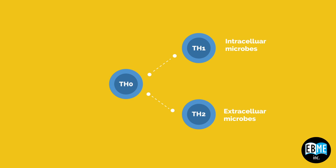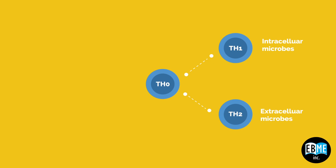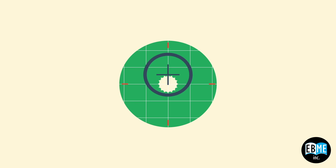Now, what regulates both this axis is something called the T-regulatory cell. You can think of this as the master regulator. Now, you might think the immune system needs to act faster and more aggressively without waiting for all this to occur. And you would be absolutely correct.